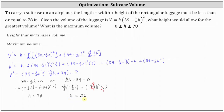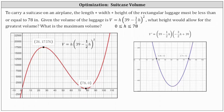To verify that a height of 26 inches maximizes the volume, we check that the volume function changes from increasing to decreasing at h equals 26. Looking at the graph of the derivative function on the right, it verifies we have critical numbers at h equals 26 and h equals 78. The derivative changes from positive to negative at h equals 26, which indicates the volume function changes from increasing to decreasing at h equals 26, resulting in a relative maximum.